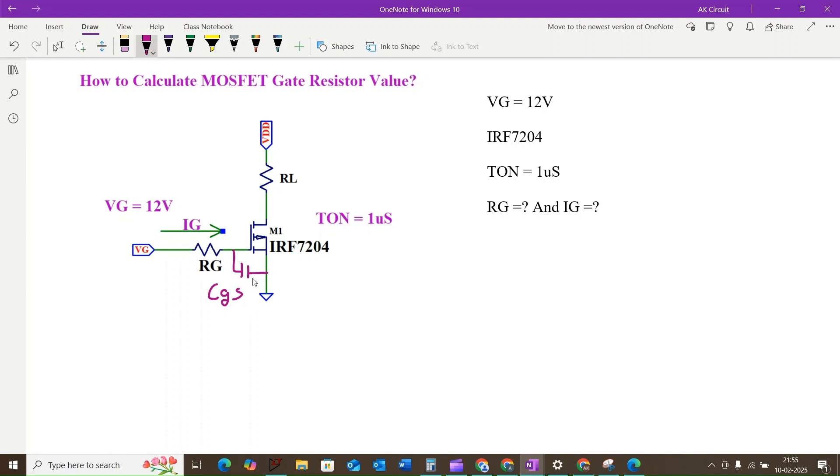This capacitance stores the charge which we can call it as QGS or we can consider it as gate charge to switch the MOSFET on and off.